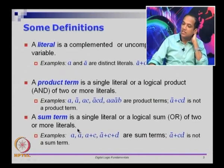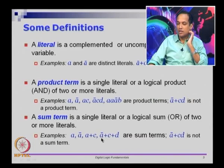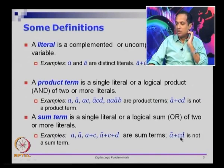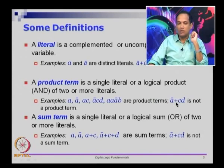Similarly, a sum term is a single literal or a logical sum (OR) of two or more literals. So a, a bar, a + c (logical OR of two literals), and a bar + b + c (logical OR of three literals) are all valid sum terms. The expression a bar + cd is not a valid sum term because cd is not a single literal — it involves a product. A product term should not involve sums, and a sum term should not involve products.